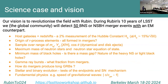Our vision is to have a revolution in this science field with Rubin. We expect to detect about 50 binary neutron star or neutron star–black hole merger events with an electromagnetic counterpart. These detections will enable study of a broad range of science fields.